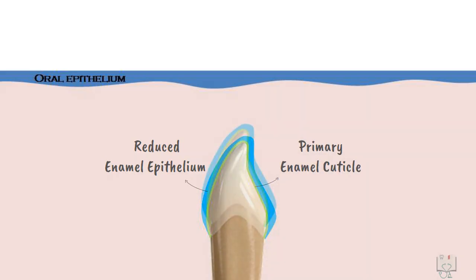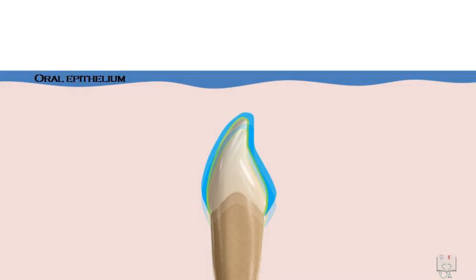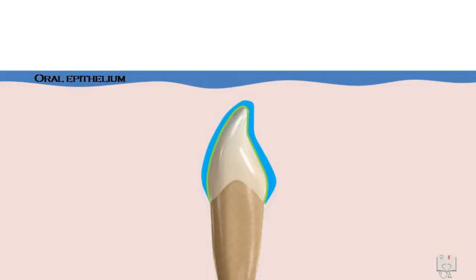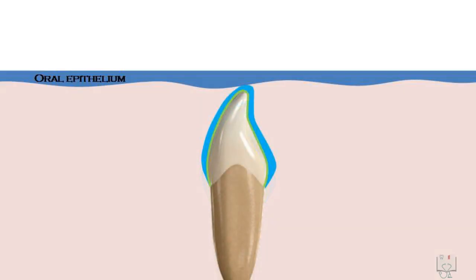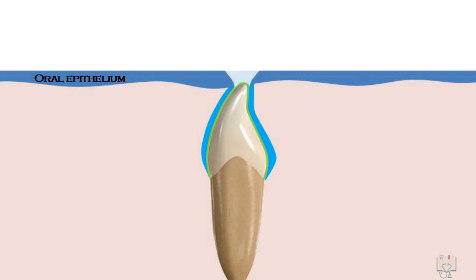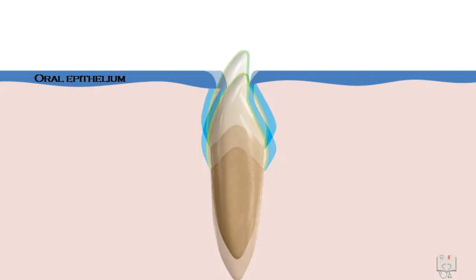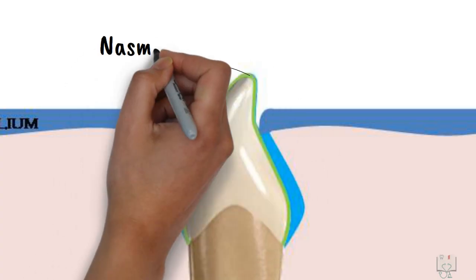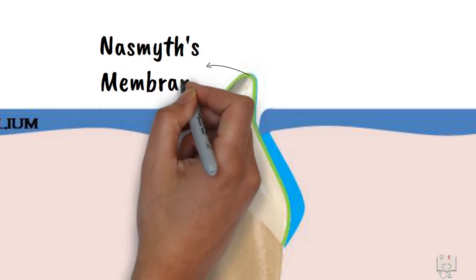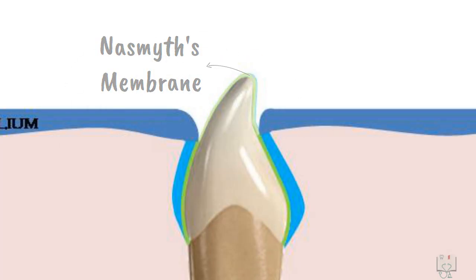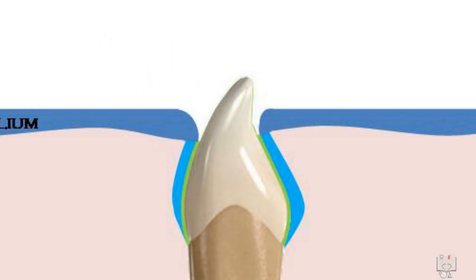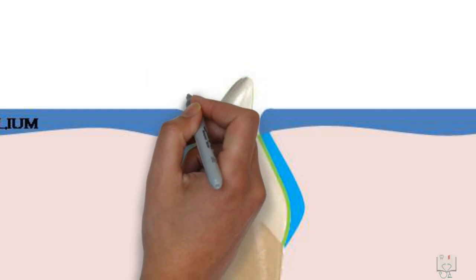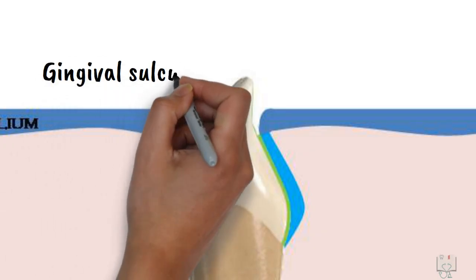As the tooth shows eruptive movements, the reduced enamel epithelium and the oral epithelium meet, fuse and degenerate. Once the tooth emerges from the gingiva, the primary enamel cuticle on the exposed surface of the crown is called Nasmyth's membrane, which soon gets removed by mechanical forces. At the junction of the gingiva and the tooth, a shallow groove develops called the gingival sulcus.